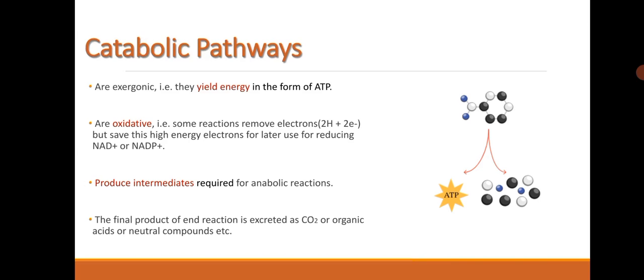Catabolic pathways are exergonic, that is they yield energy in the form of ATP. They are oxidative, meaning some reactions remove electrons but save these high energy electrons for later use for reducing NAD plus or NADP plus. Catabolic pathways produce intermediates required for anabolic reactions and the final products are excreted as CO2 or organic acids or neutral compounds.